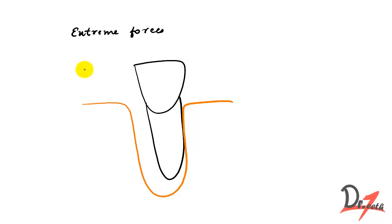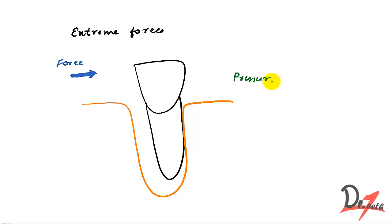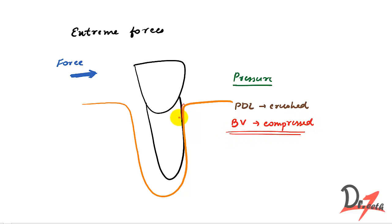Now let's see what happens when we apply extreme forces. On the pressure side, the PDL is almost completely crushed. The blood vessels present there get compressed, causing loss of nutritional supply. This leads to something called hyalinization — because of the loss of blood supply, the cellular elements undergo necrosis, losing their histologic appearance including their nuclei. That loss of cellular structure is called hyalinization.